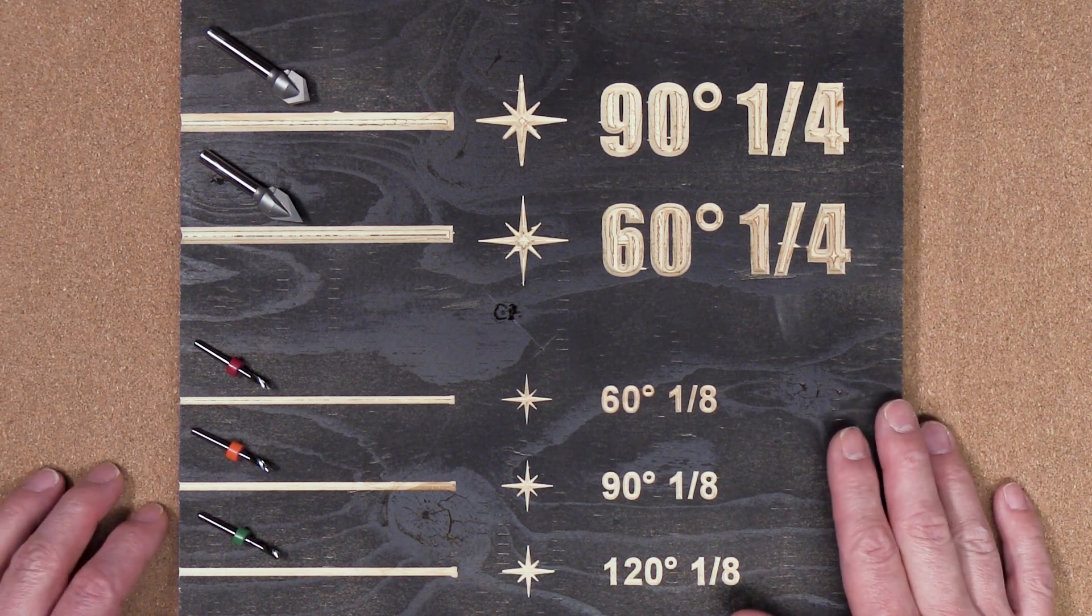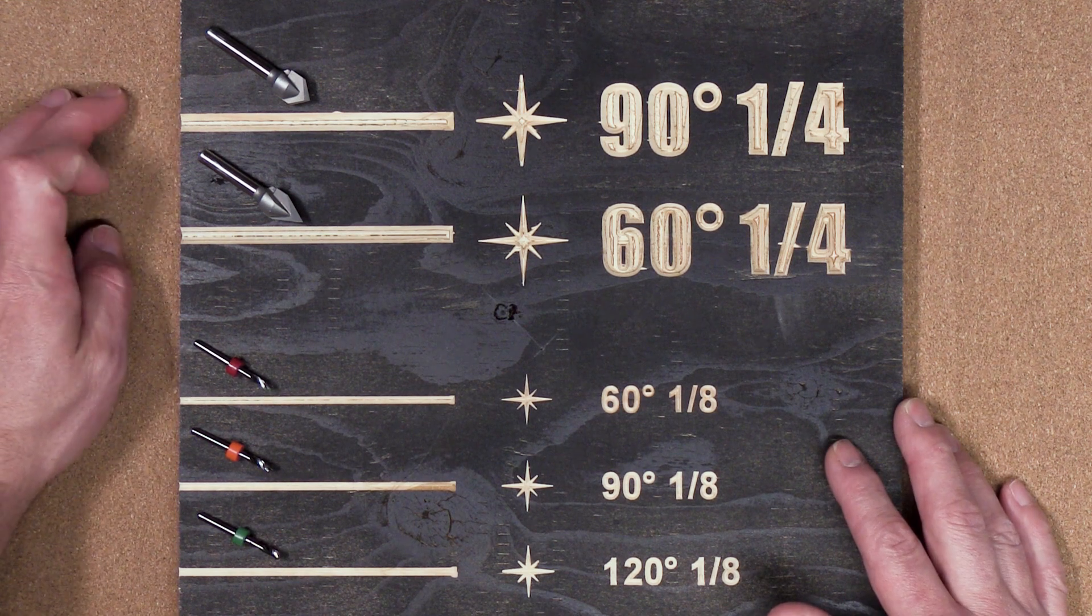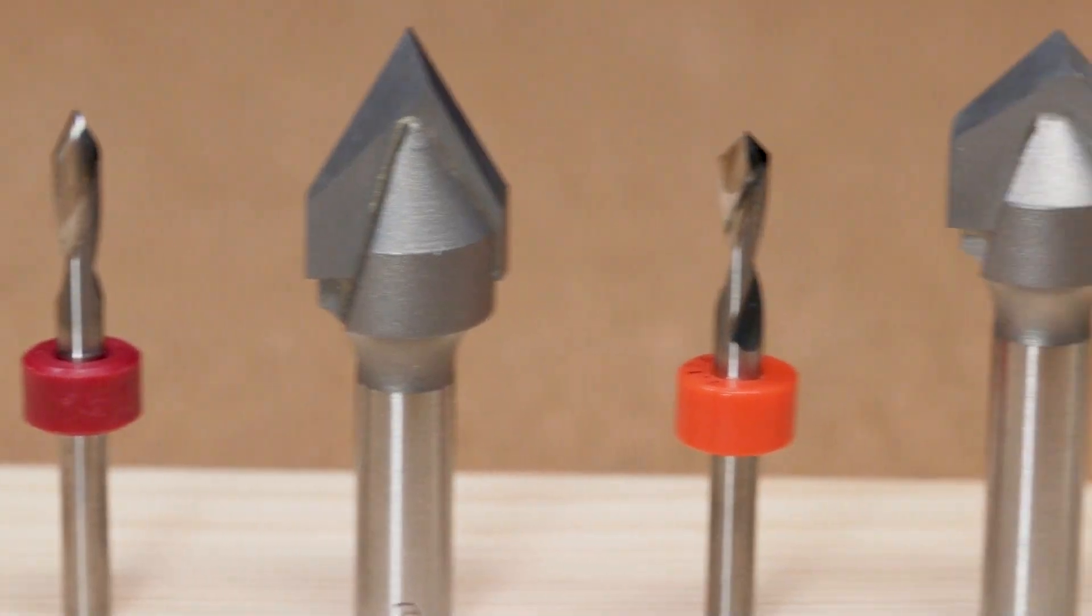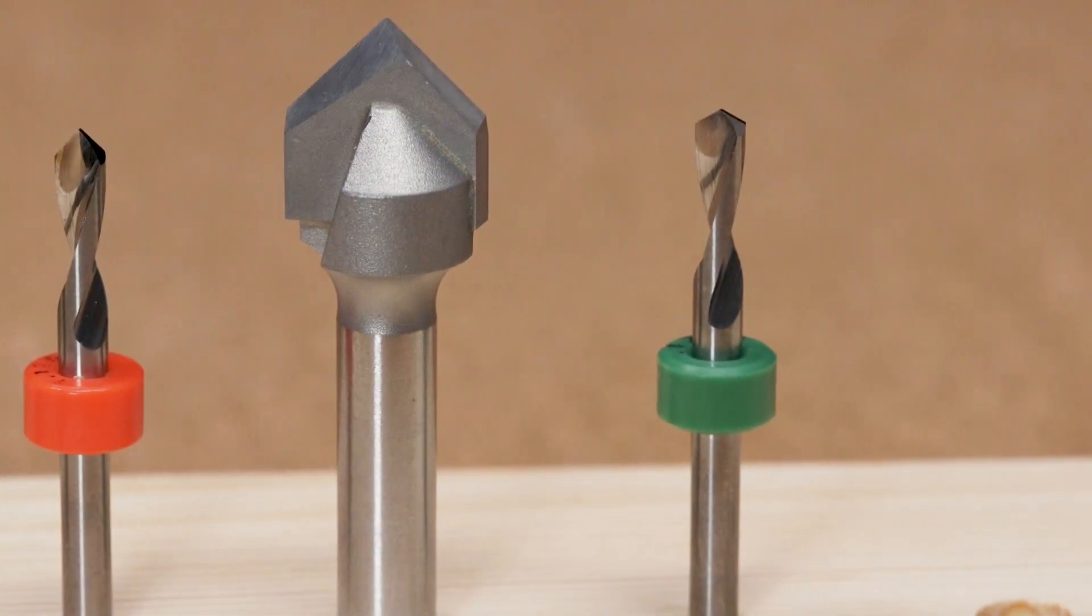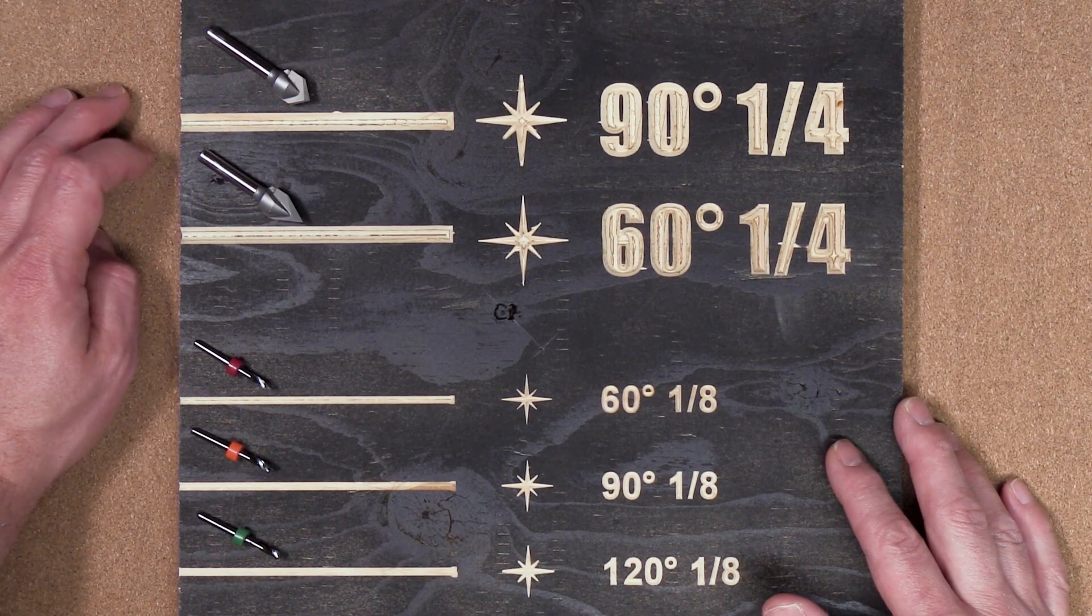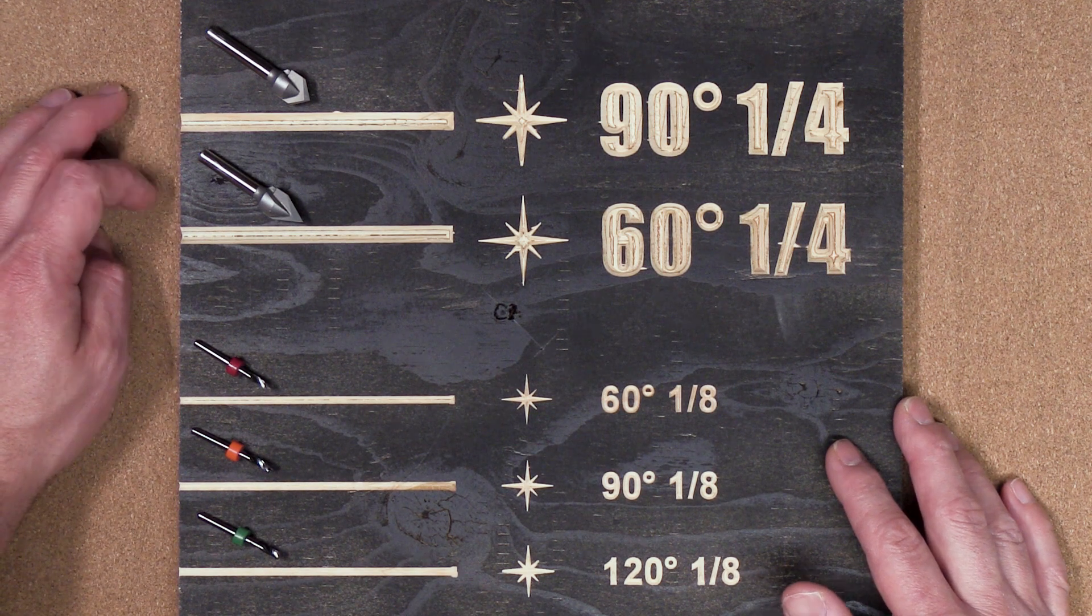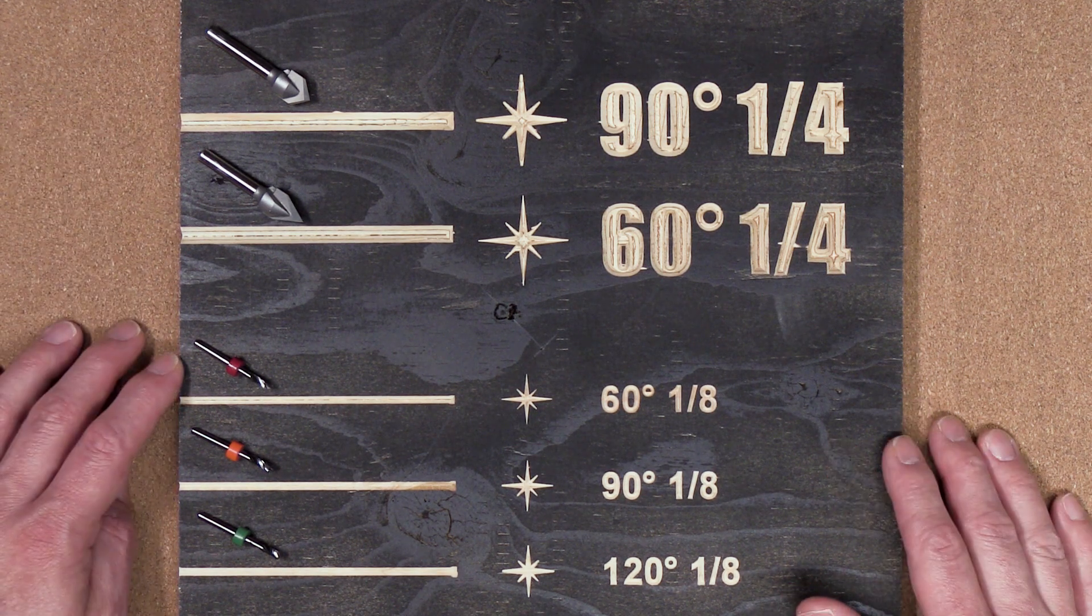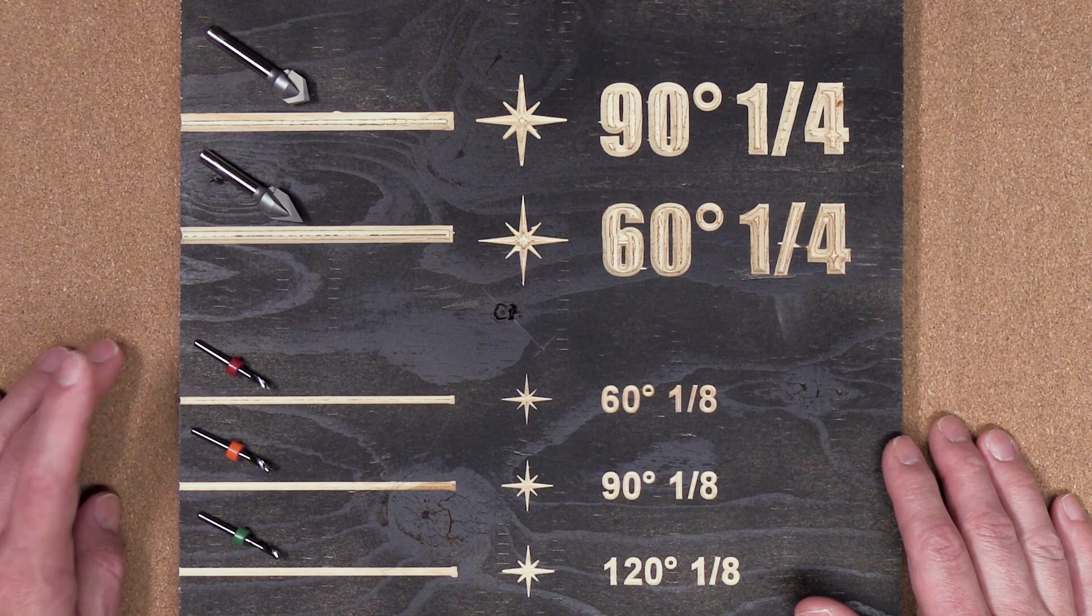V-bits come in different shapes and sizes, but the only real difference is the angle of the cutting tip and the diameter of the bit. Today we're going to look at two popular quarter inch bits, the 90 and the 60 degrees, and we're also going to look at some 1/8 bits in 60, 90, and 120 degrees for comparison.